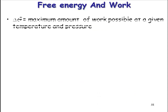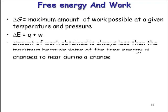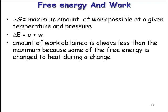Free energy and work. Delta G is maximum amount of work possible at a given temperature and pressure. Delta E equals Q plus W, heat plus work. Amount of work obtained is always less than the maximum because some of the free energy has changed to heat. It can't be 100% efficient. Cars are approximately 30% efficient, and that's for a really good car.